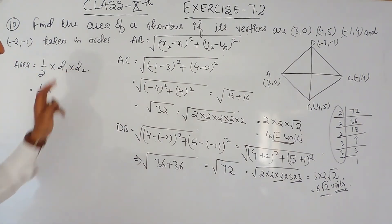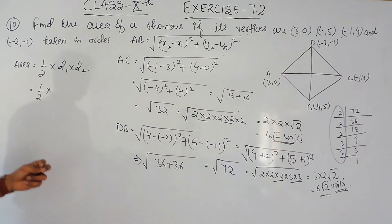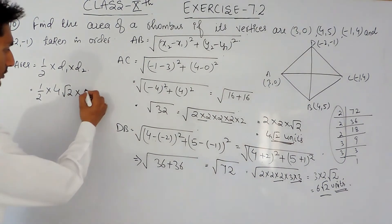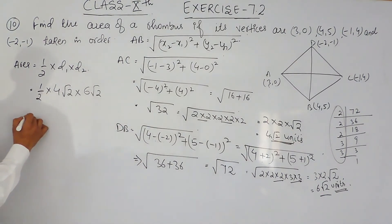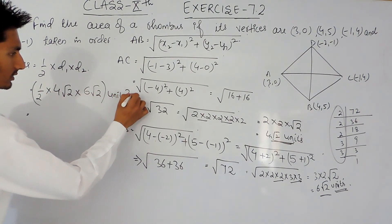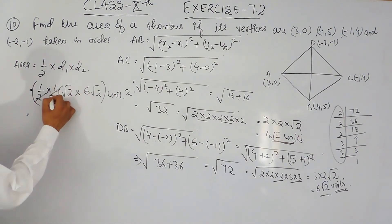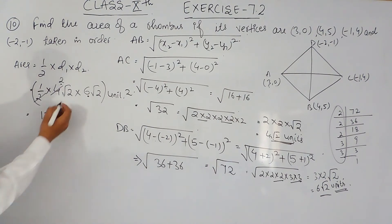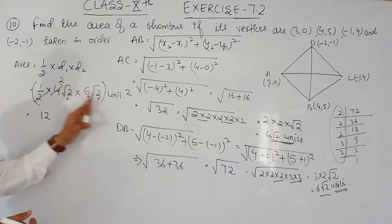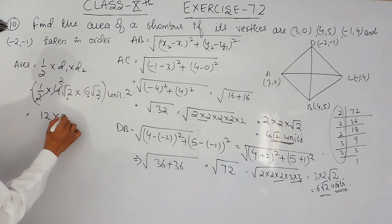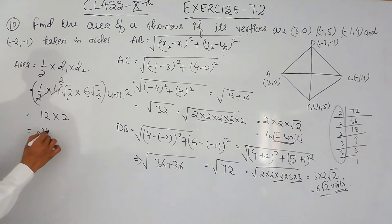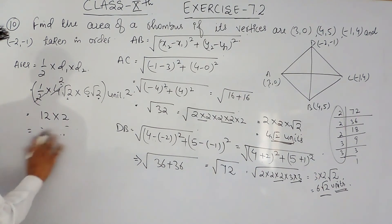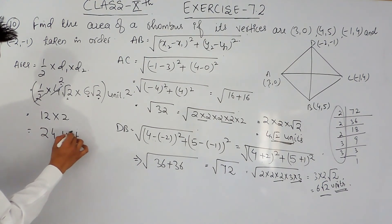Now we know the length of each diagonal. Applying the area formula: area equals half times d1 times d2, which is half times 4 root 2 times 6 root 2. The 2 in the denominator cancels, and multiplying numbers with numbers and roots with roots: we get 4 times 3 times root 2 times root 2, which gives 12 times 2 equals 24 square units. So the area of the rhombus is 24 square units.